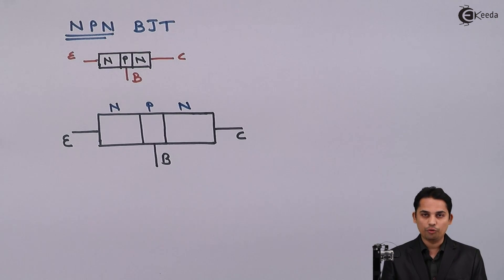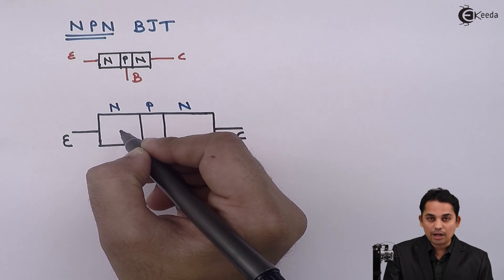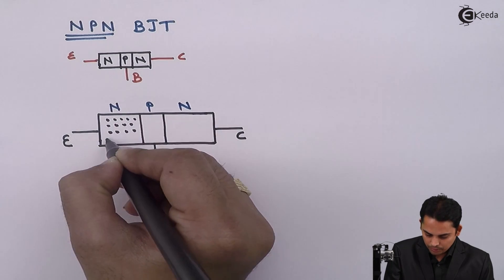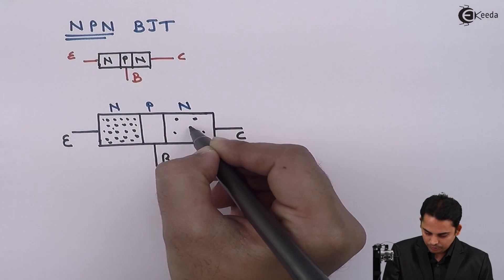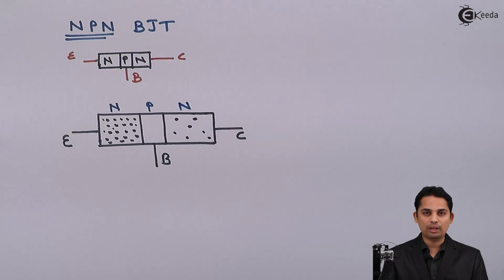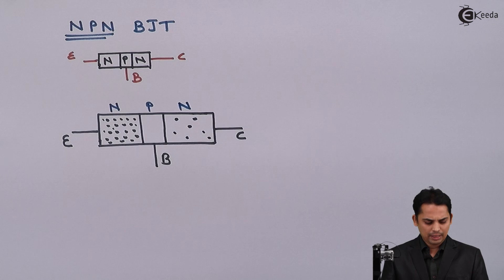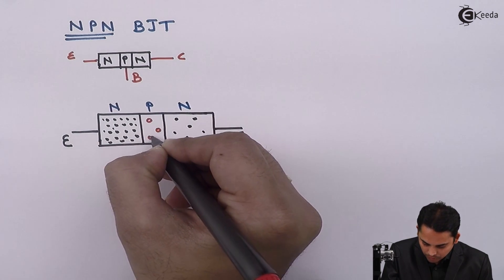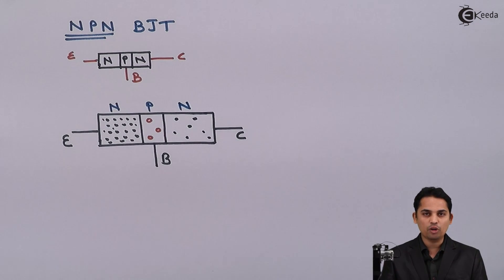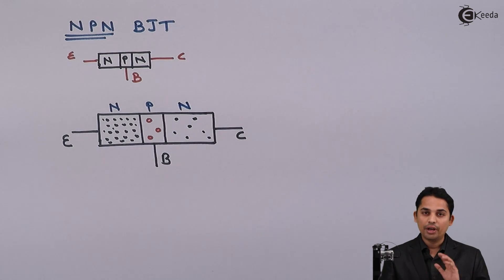We can show this with the help of majority and minority carriers. In N semiconductors, electrons are the majority carriers. In the emitter, doping is maximum, whereas in the collector, doping is medium. In the base, the majority carriers will be holes. This is the construction of BJT having different widths for emitter, base, and collector, as well as different doping levels of majority carriers. This is the NPN type BJT and its construction.